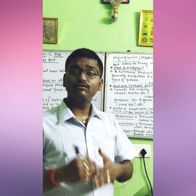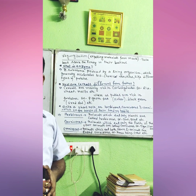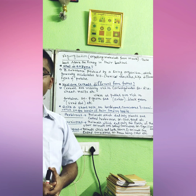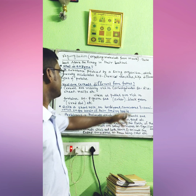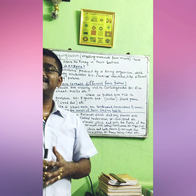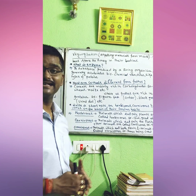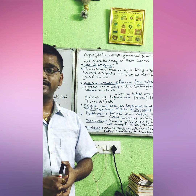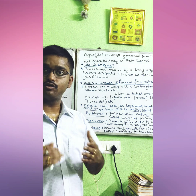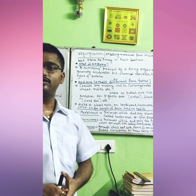Now, how are cereals different from pulses? Cereals are mainly rich in carbohydrates. Examples of cereals include rice, wheat, and maize. We take rice or wheat because they contain carbohydrates in maximum amounts, and from carbohydrates we get the energy to do all kinds of work.